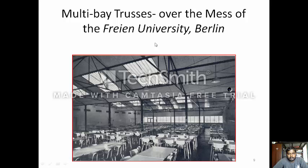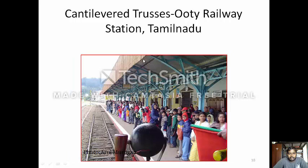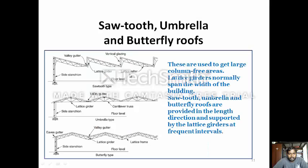This is a multi-bay truss over a gymnasium at Berlin University in Berlin. This is an example of cantilever trusses in Ooty Railway Station in Tamil Nadu. This is a truss with cantilever with one end fixed and the other end free. This is a saw tooth, umbrella, and butterfly truss. This shows the valley girder, vertical glazing, glazing, lattice girder, and a side section. This is a saw umbrella type.